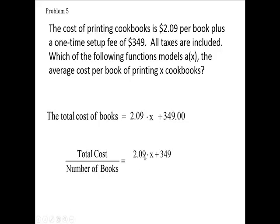So this is the total cost, and X is the number of books. This is the average here. So we're going to write that as the average, which is A of X.